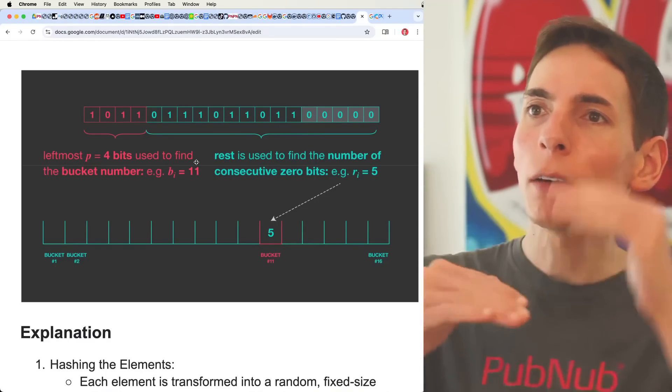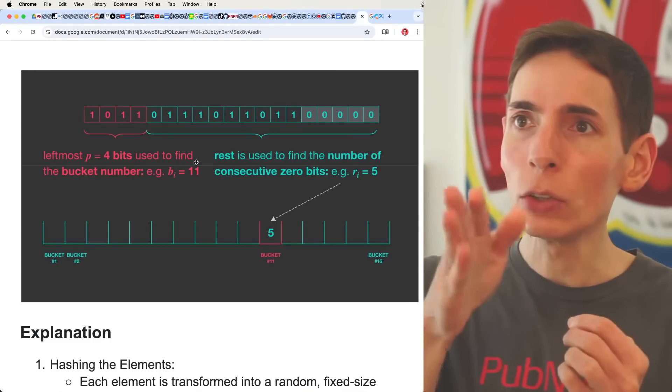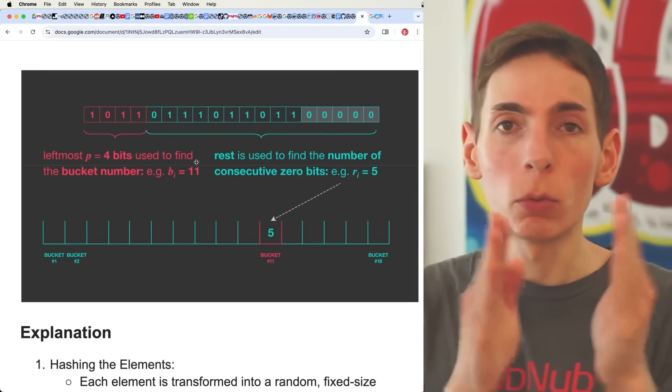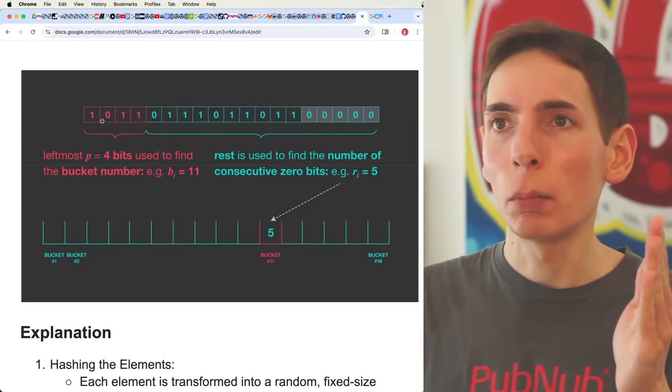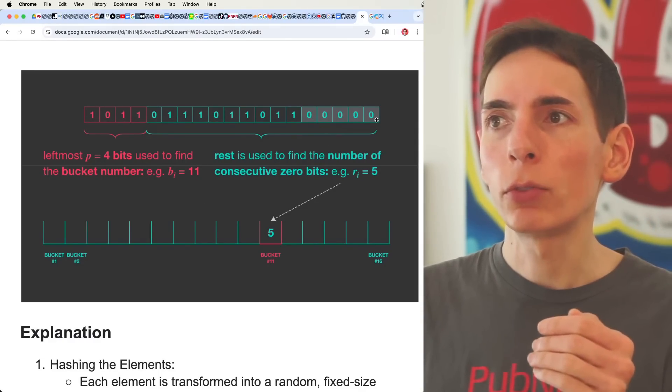So then what you do is every time you add another string into this HyperLogLog structure, you hash that element, the word apple, into strings of a binary string. You determine what bucket it goes in. And then you count the number of zeros at the end.